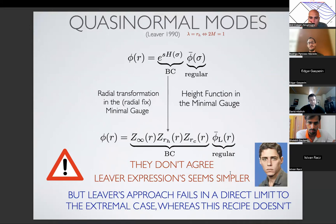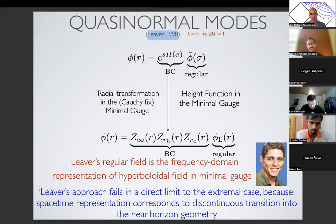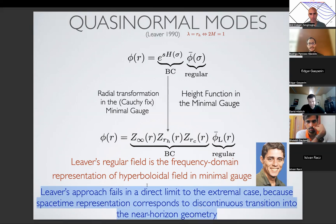Now we can go back to what Leaver was doing. If I follow the recipe one way — where the Cauchy horizon moves around — I can get the extremal limit straight away. If I change to the Cauchy-fixed approach, still within the minimal gauge mindframe, I reproduce Leaver's work. And there is now a spacetime understanding: Leaver's algorithm fails in the extremal case because in the hyperboloidal representation we are making a discontinuous transition into the near-horizon geometry. This allows us to understand what's going on with some of these algorithms.